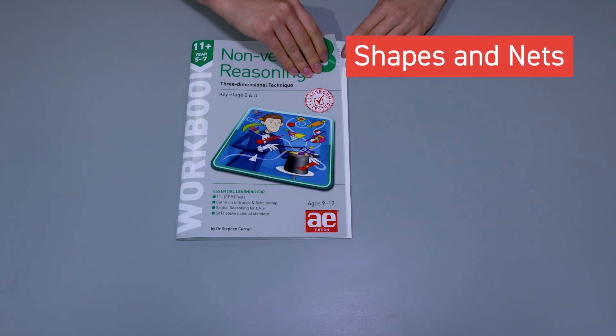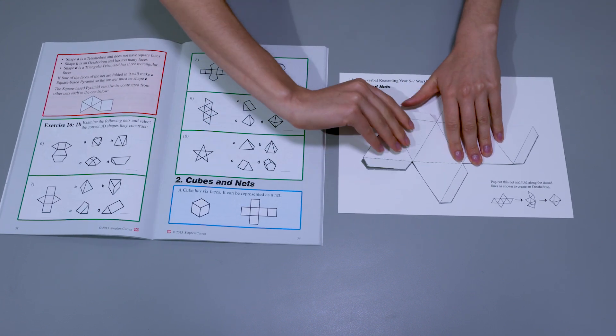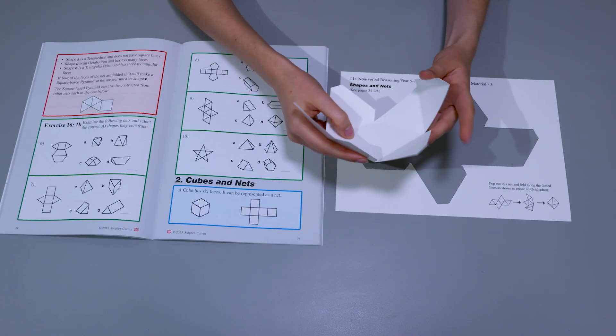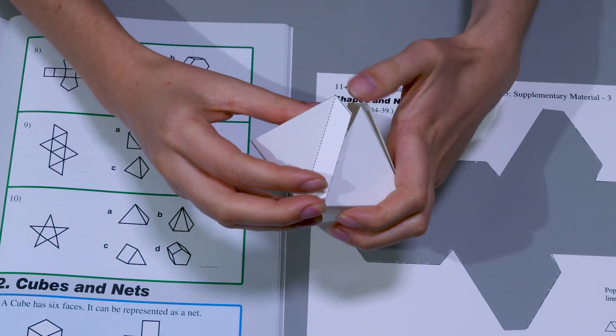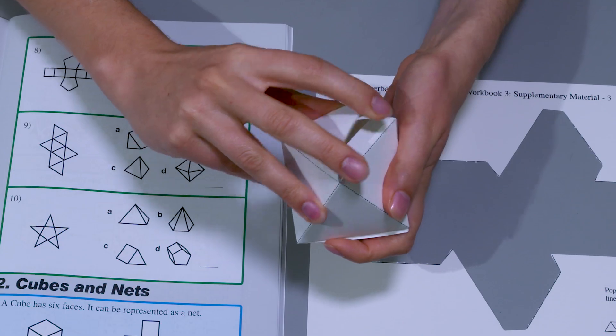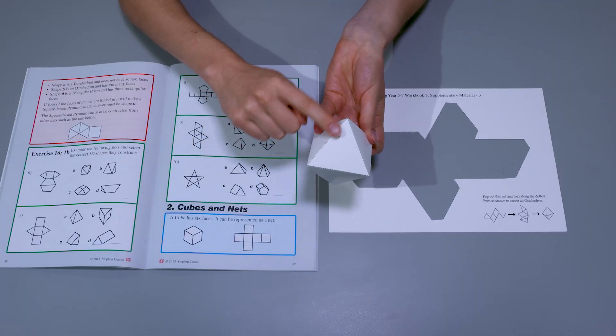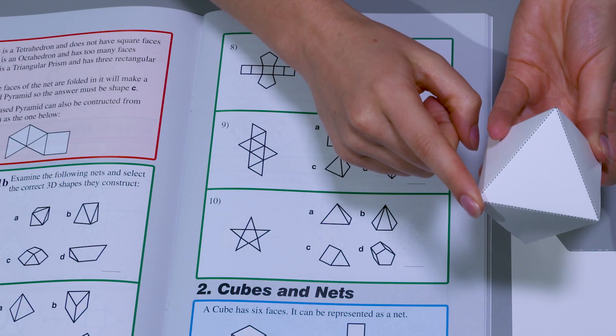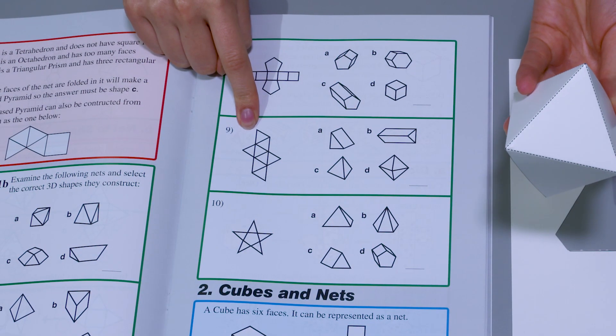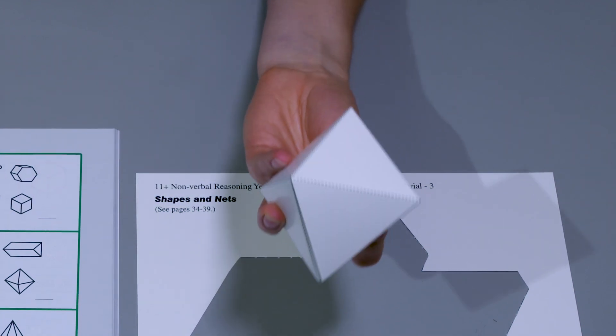Shapes and Nets. The packs include nets which can be popped out and constructed into 3D shapes. They are a good introduction to understanding the properties of 3D shapes such as the number of faces, edges, and vertices, and are helpful aids for children to understand the relationship between 2D nets and 3D shapes.